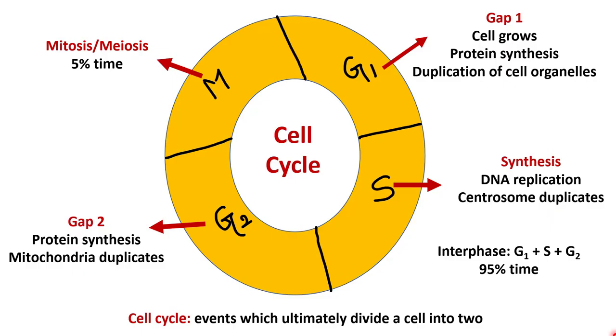In our previous lecture, we saw how cell cycle works. Cell cycle has interphase and M phase. Interphase consists of G1, S, and G2 phase. Now we are continuing the video series on how checkpoints work in cell cycle.